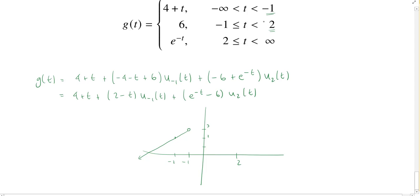Now when we get to negative 1, it jumps all the way up to 6. So it's just a constant function now, starting at negative 1 and going all the way to 2. So I'll put a little hole at 2 and connect these dots.